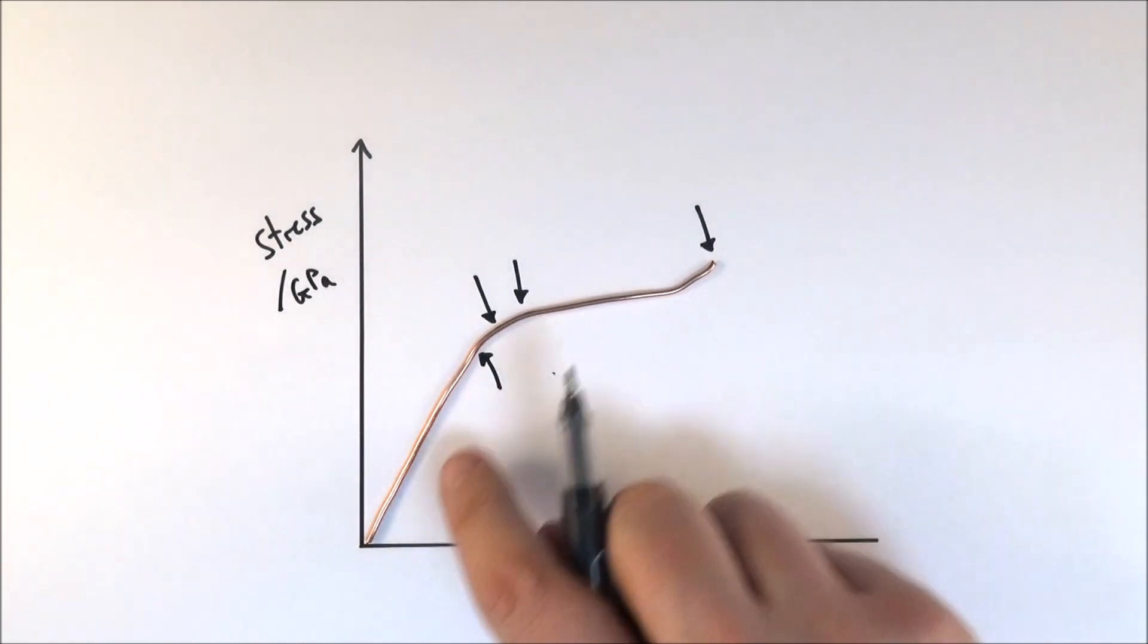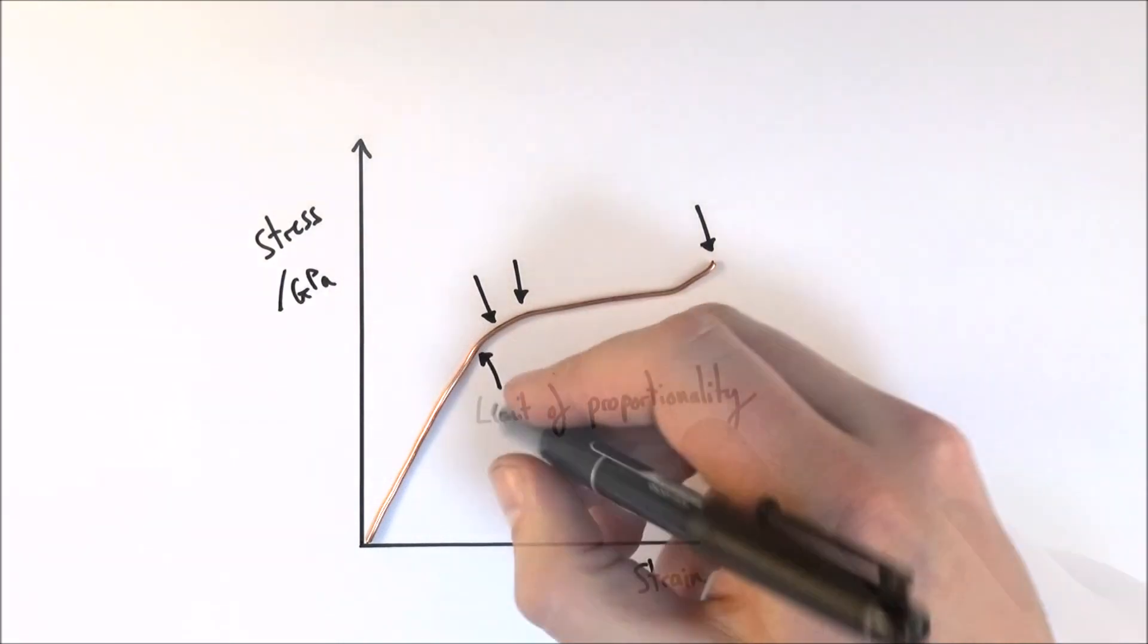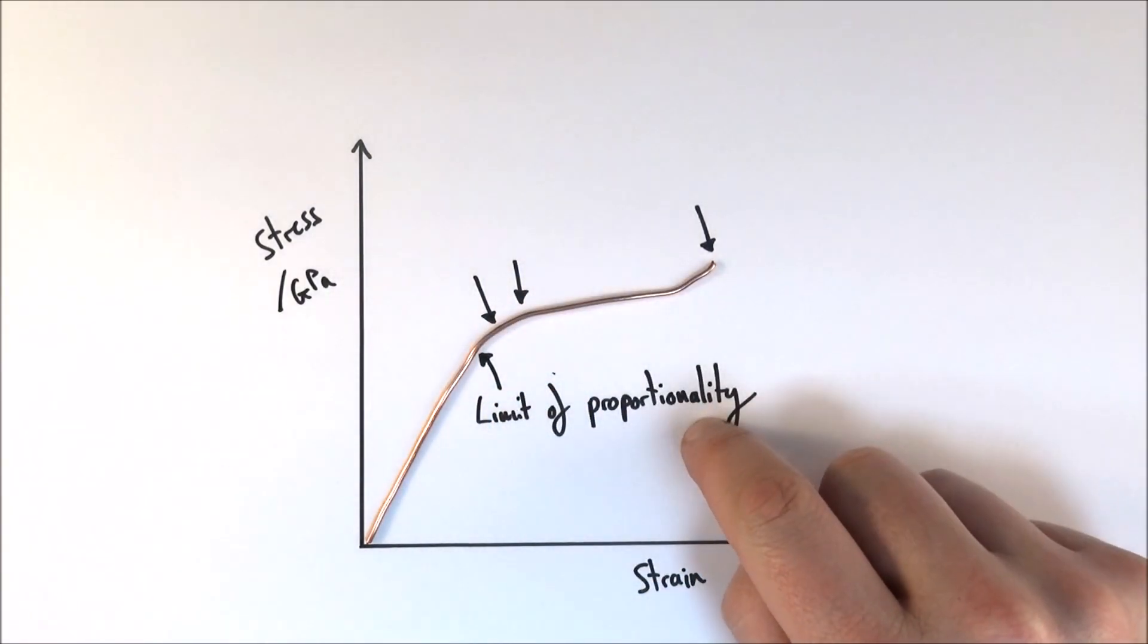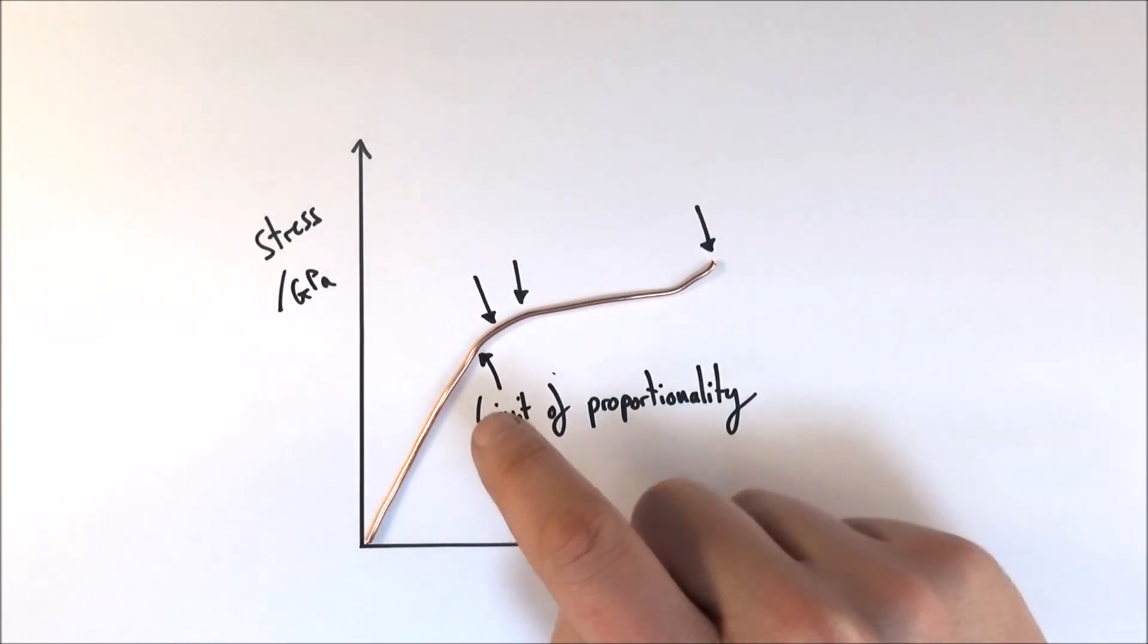So the first point that we get to is what we call the limit of proportionality. This limit of proportionality is really the point where the stress and the strain stop being proportional to one another.